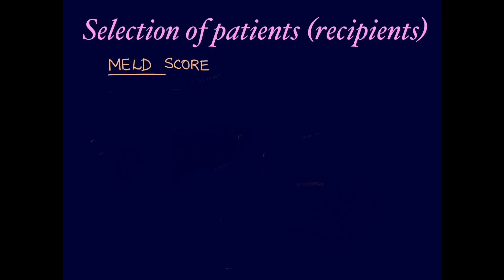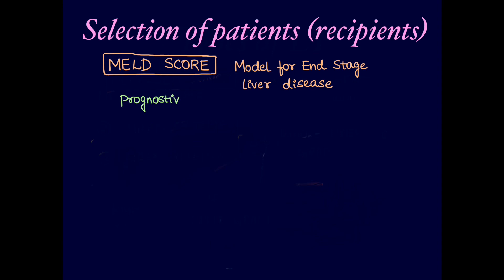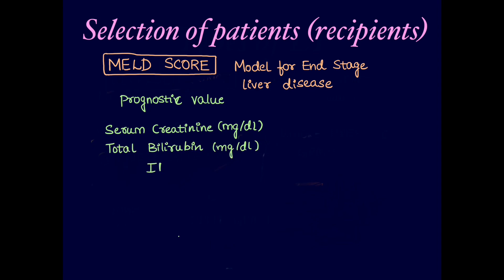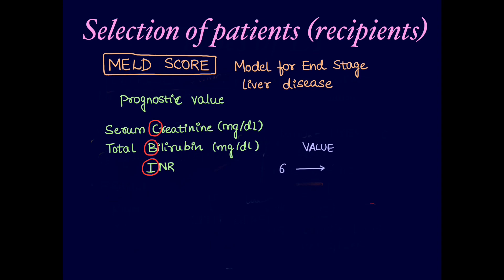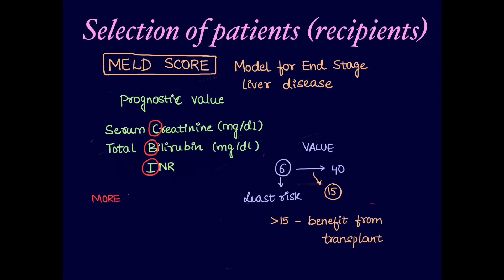The MELD score stands for Model for End Stage Liver Disease. It is of prognostic value and uses three parameters — serum creatinine in mg/dL, total bilirubin in mg/dL, and INR (mnemonic: CBI). The formula is complex and need not be memorized. The score ranges from 6 to 40; above 15 indicates the patient is likely to benefit from transplantation. Higher scores require earlier surgery; lower scores allow waiting up to 3 months, reducing morbidity and mortality.